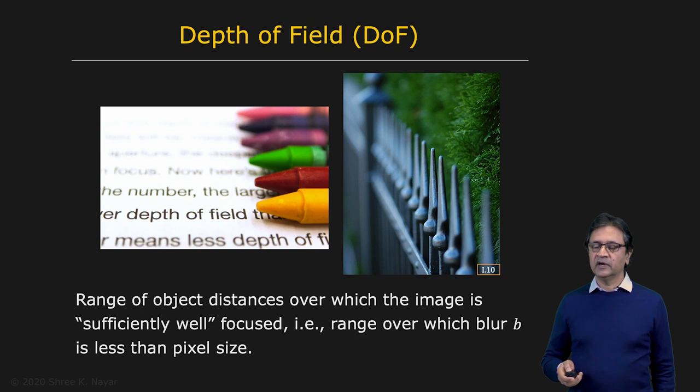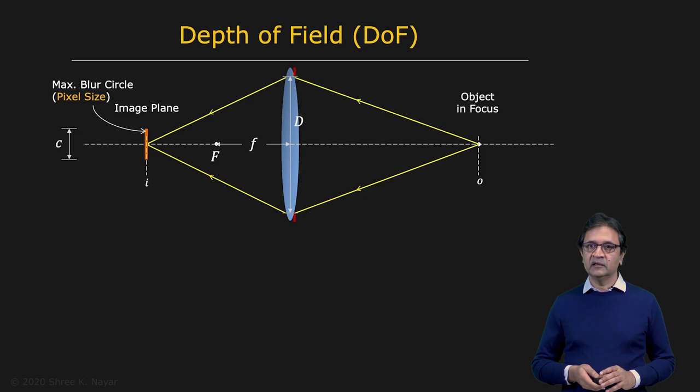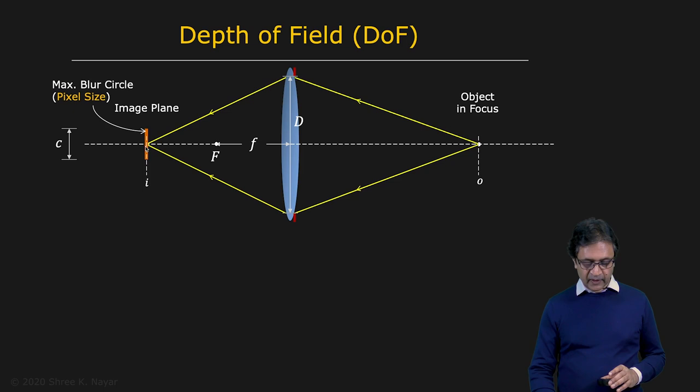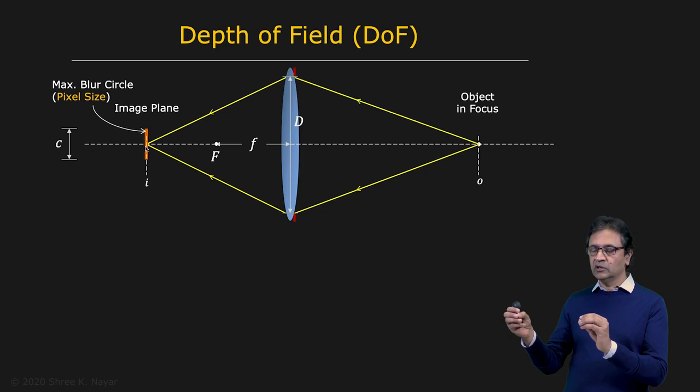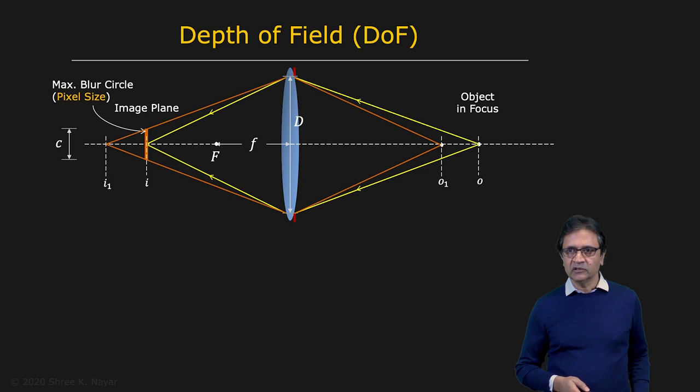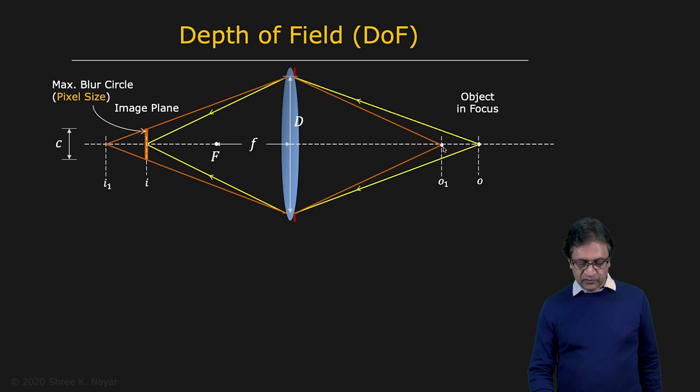So let's find the depth of field of a lens system. We first define the pixel size — let's call that C. We want to find the range of distances of the object O for which the blur is going to be smaller than C. Consider point O1: this is the point for which the diameter of the blur circle exactly equals the size of the pixel C.